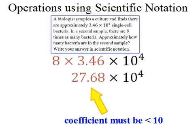To be in proper scientific notation form, the coefficient's got to be 1 or greater and less than 10. So what we're going to do, therefore, is we're going to turn that coefficient, 27.68, into scientific notation itself.